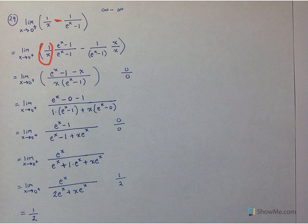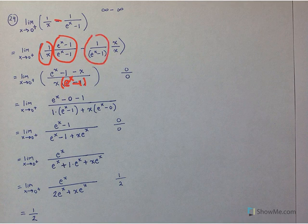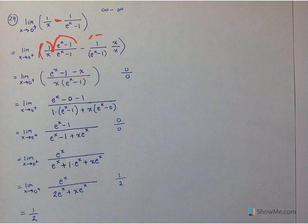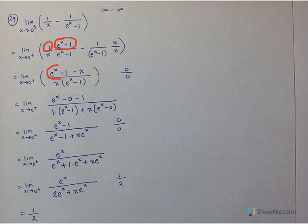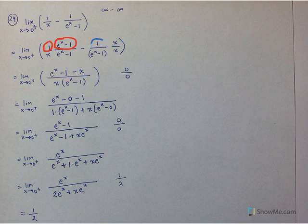When you multiply the first quantity 1/x by this form of 1, the denominator becomes x(e^x - 1). When you multiply the second quantity by its form of 1, the denominator is the same — that's our common denominator. In the numerator for the first product we get (e^x - 1), then minus x for the second product. So we've rewritten the function as a single fraction: (e^x - 1 - x) / [x(e^x - 1)].